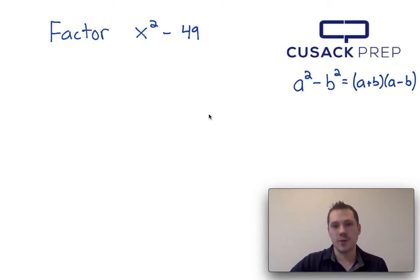x squared and 49 are both perfect squares, and since we're subtracting them, we call this the difference of squares.